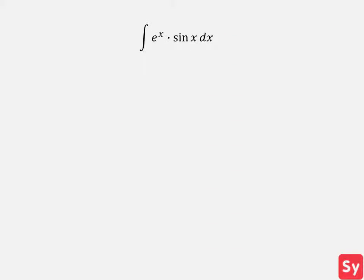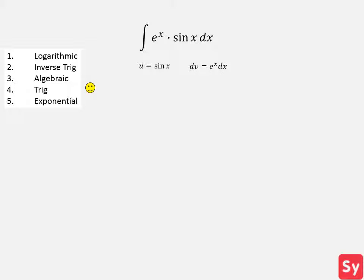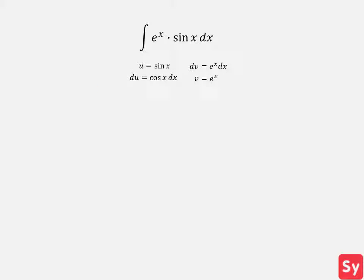The previous example was a pretty standard example of how to solve integrals using integration by parts multiple times. This next example is a little trickier because we will use algebraic manipulation to help us find the answer. We have the integral of e to the 3x times sine of x dx. We refer back to the list of what to set u equal to, and going down the list, we see that there is a trig function in the integrand. So we set u equal to sine of x and dv equal to e to the x dx. We then calculate du and v, and substitute these values into the integration by parts formula.